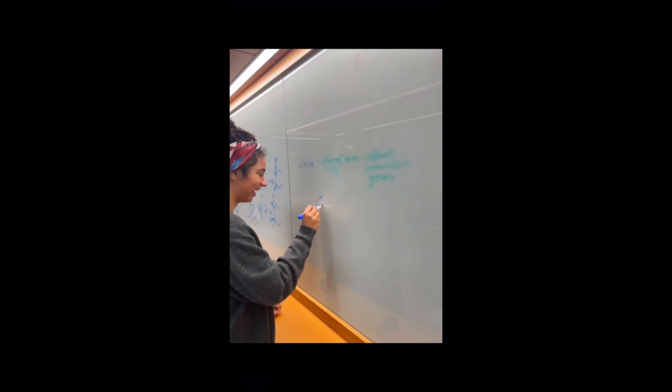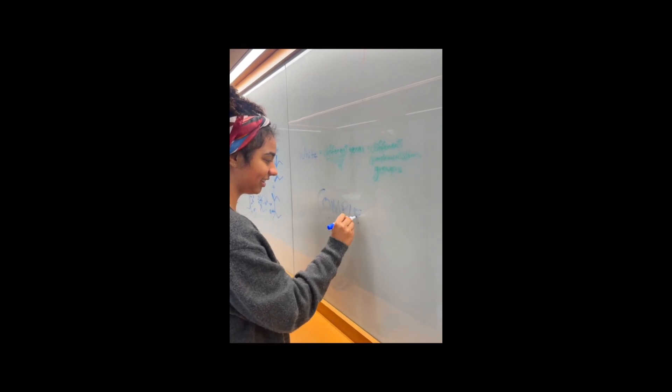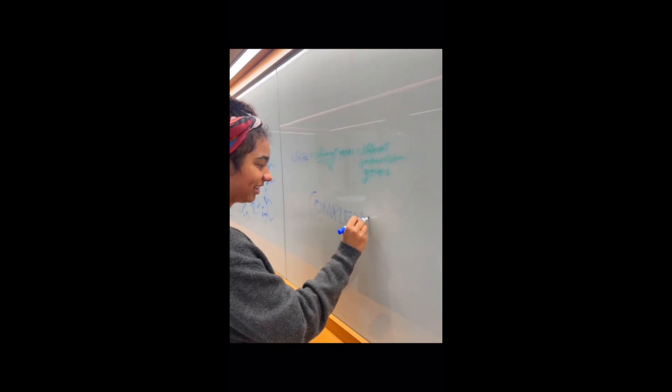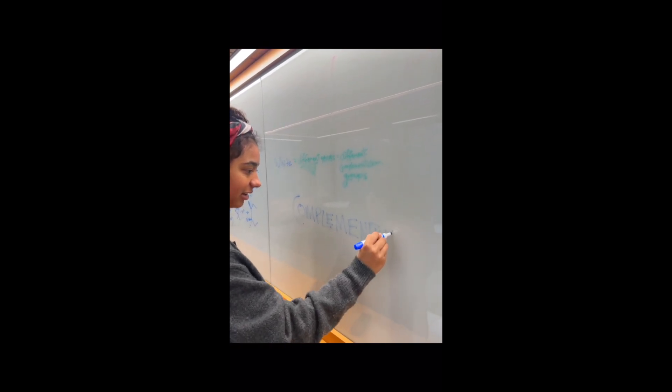And if the progeny from the cross are white, then we rescue the mutant phenotype. In that case, the recessive mutations complement each other. Isn't that nice? So those mutations are likely located on different genes.